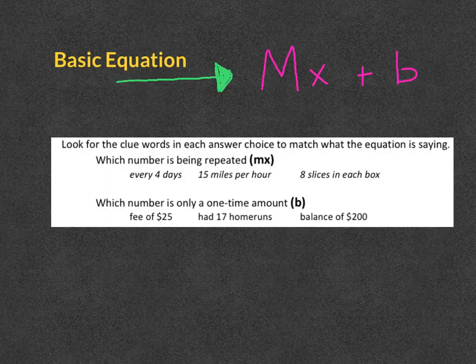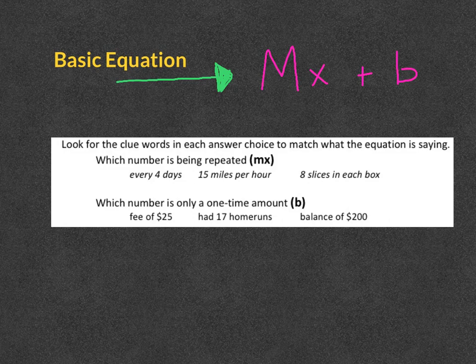So a basic equation is going to follow this format for us. We're going to have some number being multiplied, and then we're either going to add or subtract one number by itself.